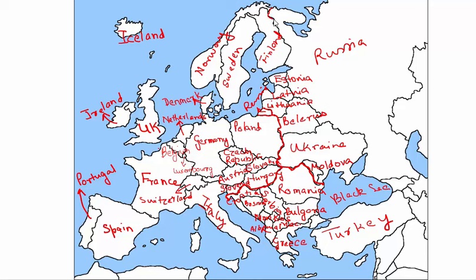To recap: first we saw the entire western part of Europe, then the southeastern part, then Russia and the countries that segregated from the USSR, and finally the Scandinavian countries. All together, this formulates Europe as we know it. Thank you — I hope you'll remember a lot of these countries from now on!